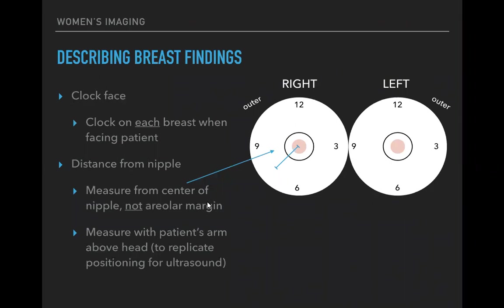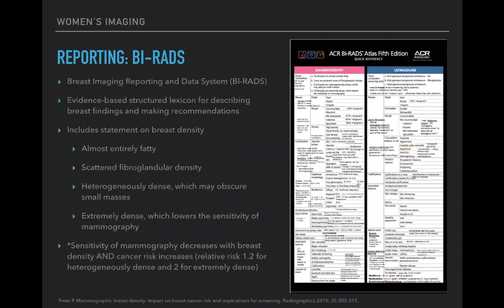Ideally any palpable lump is examined with the patient's arm above the head, which replicates ultrasound positioning. Breast imaging reporting follows BI-RADS — the Breast Imaging Reporting and Data System — put out by the American College of Radiology. It's an evidence-based structured lexicon for describing breast findings and making recommendations, designed to avoid confusion, standardize follow-up, and provide appropriate evidence-based management.